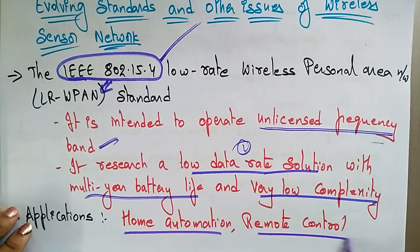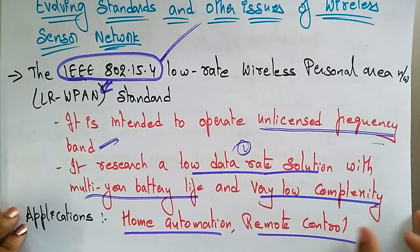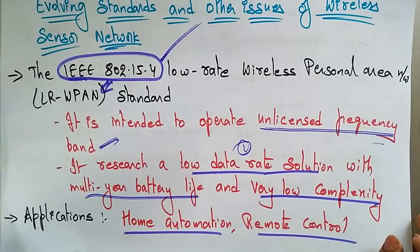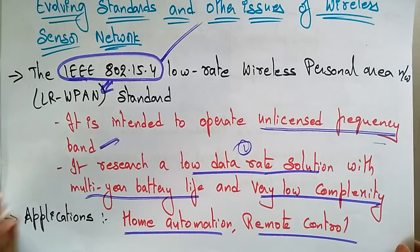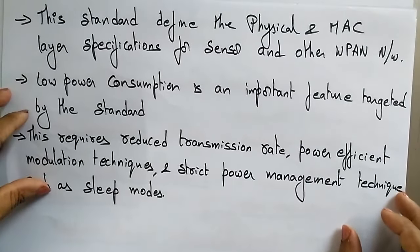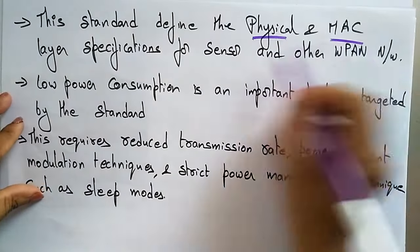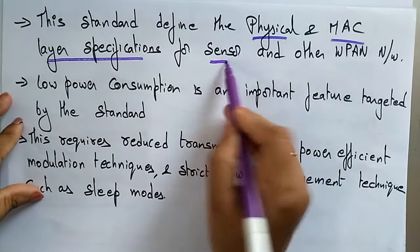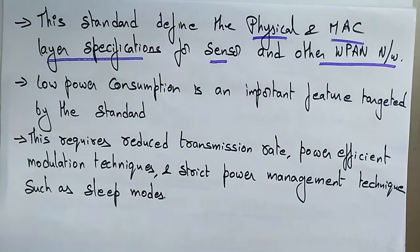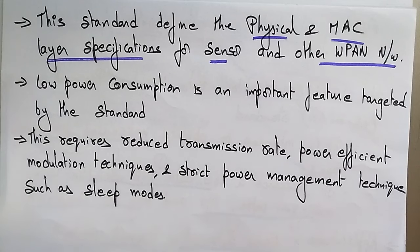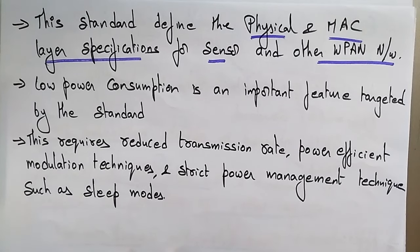The applications of this evolving standard, IEEE 802.15.4, include home automation and remote controls. This standard also defines the physical and MAC layer specifications for sensors and other wireless personal area networks.